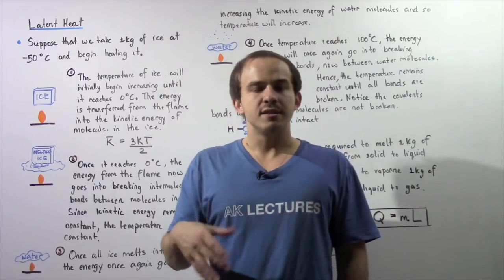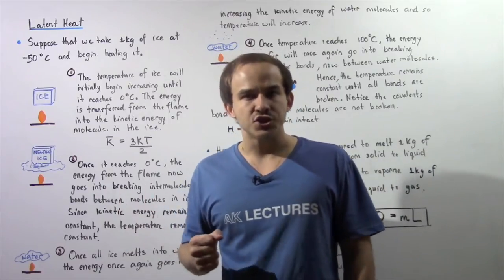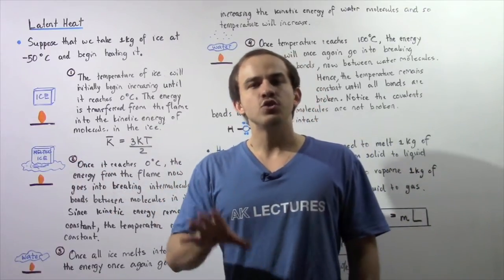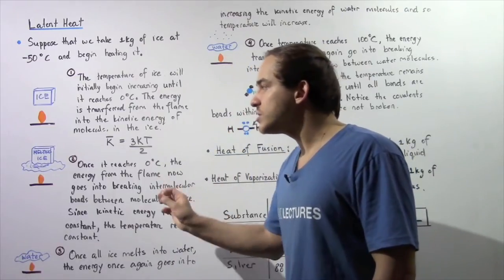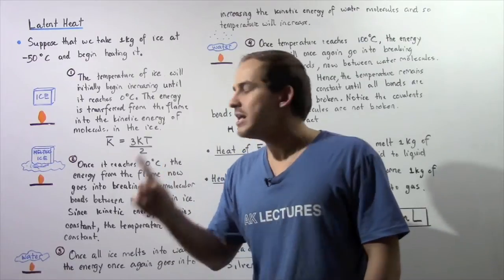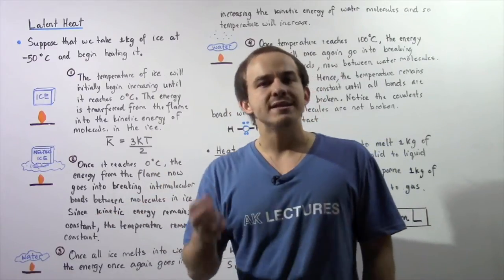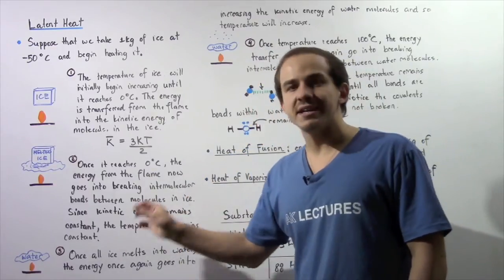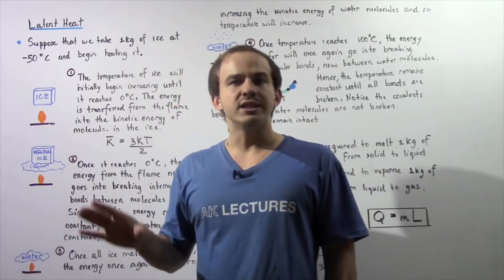Melting is the process by which a phase change takes place — the solid state begins to transform into the liquid state. Because all the energy goes into breaking the intermolecular bonds and not increasing the kinetic energy, the kinetic energy remains constant. That means the temperature will remain constant until all the ice has completely melted into liquid water.